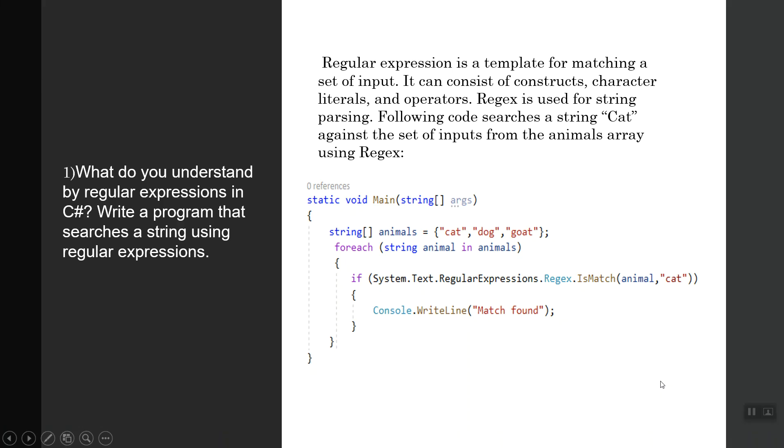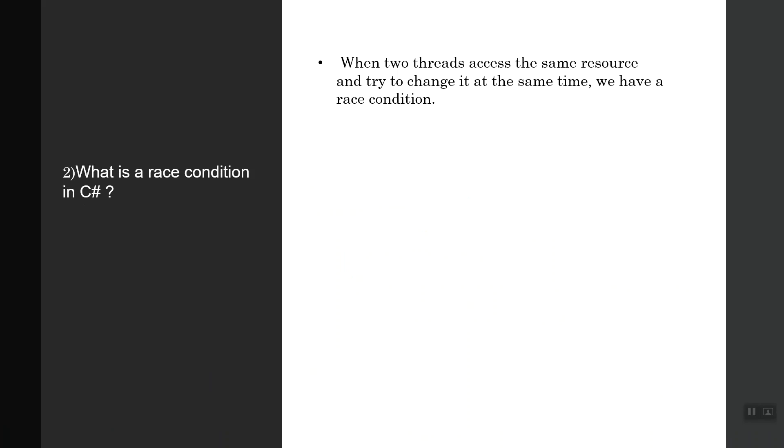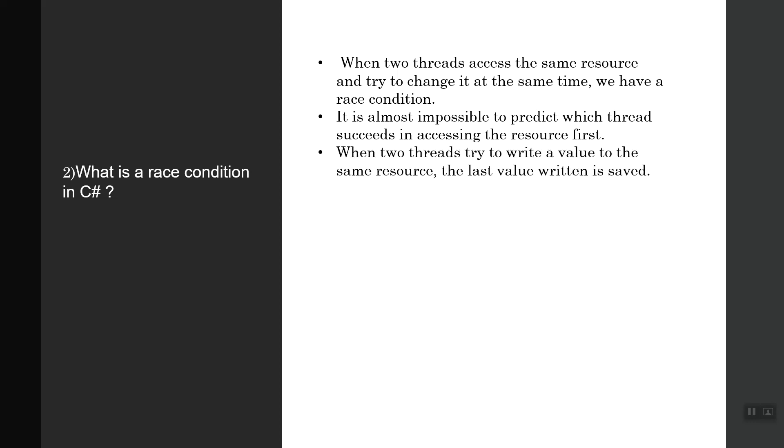The next question is what is the race condition in C#? When two threads access the same resource and try to change it at the same time, we have a race condition. It is almost impossible to predict which thread succeeds in accessing the resource first. When two threads try to write a value to the same resource, the last value written is saved.